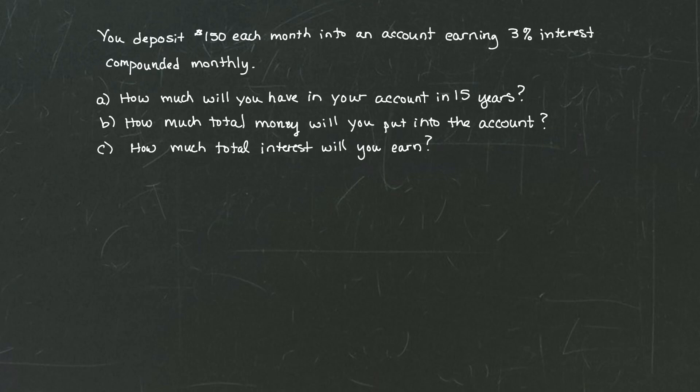So you deposit $150 each month into an account earning 3% interest compounded monthly. How much will you have in your account in 15 years? How much total money will you put into the account? And finally, how much total interest will you earn?